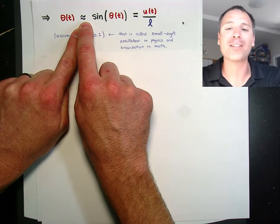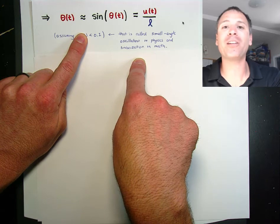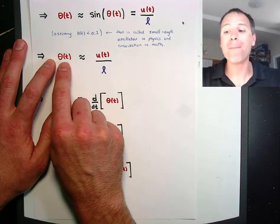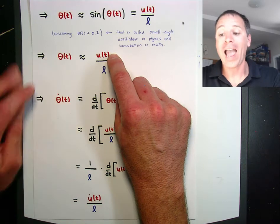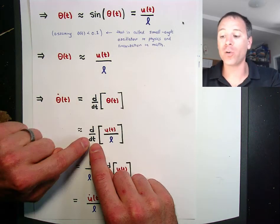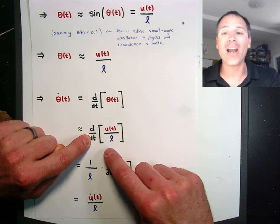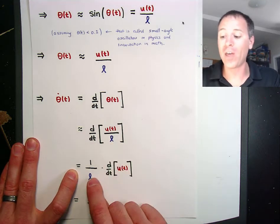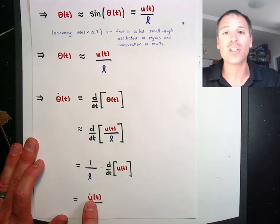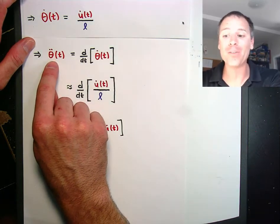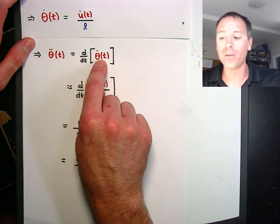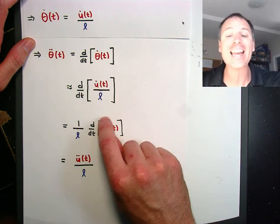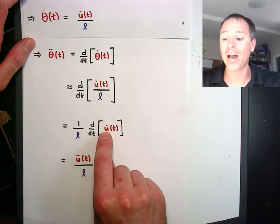With that small angle oscillation assumption in hand, we immediately relate theta of t to u, so theta dot equals the first derivative of u of t over L. One over L is a constant we can pull out. That means theta double-dot is the derivative of u-dot divided by L, which equals u double-dot over L. We've now successfully expressed both theta and its second derivative in terms of u and its second derivative, ready to substitute into the differential equation.